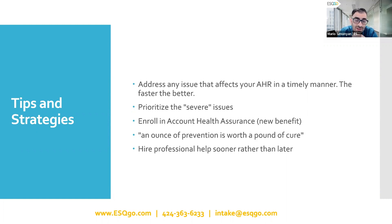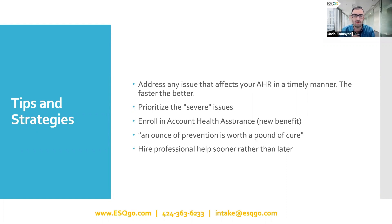Another tip: if you know an item you're going to list is going to be problematic, don't list it. You don't want to put yourself at risk — an ounce of prevention is worth a pound of cure. This is mostly for arbitrage sellers, whether online or retail arbitrage. If you know a brand is super aggressive in enforcing their IP, then maybe don't list it, because you're consciously taking that risk.